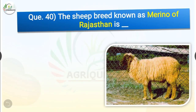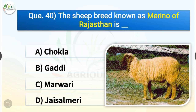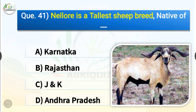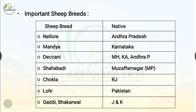Question number 40. The sheep breed known as Merino of Rajasthan is dash. The options are Chokhla, Gaddi, Marwari or Jaisalmeri. The correct answer is option A, Chokhla. Question number 41. Nellore is the tallest sheep breed native of dash. The options are Karnataka, Rajasthan, Jammu and Kashmir or Andhra Pradesh. The correct answer is option D, Andhra Pradesh. So Nellore is native to Andhra Pradesh; Mandya is native to Karnataka; Deccani is native of Maharashtra, Karnataka and Andhra Pradesh; Shahabadi is native to Muzaffarnagar; Chokhla is native to Rajasthan; Lohi is native to Pakistan; and Gaddi-Bhakarwal is native to Jammu and Kashmir.